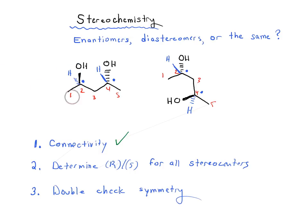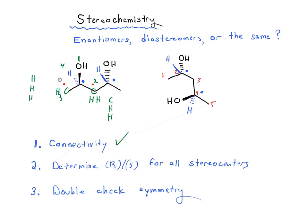Now we're going to calculate R and S. What would be the highest priority atom attached to carbon number 2? That should be the O, so O is number 1. The lowest priority should be H. Then we've got a carbon — CH3 on one side and CH2 on the other. The carbon on the left is attached to three hydrogens, and the carbon on the right is attached to two hydrogens as well as another carbon, so it's going to be higher priority. So CH2 is priority 2, and CH3 is priority 3.